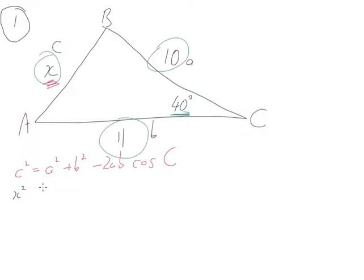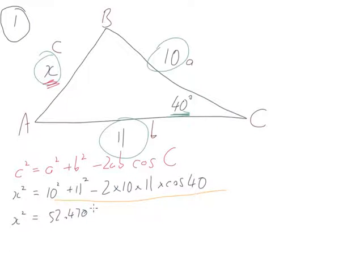Substituting in, c is x. So x squared equals 10 squared plus 11 squared minus 2 times 10 times 11 times cos 40. And I'll substitute all that and put all this here into my calculator. I'll let you know what value I get because it could get a bit messy.